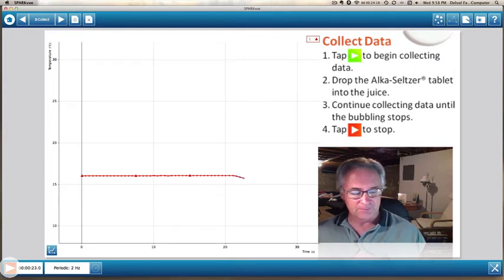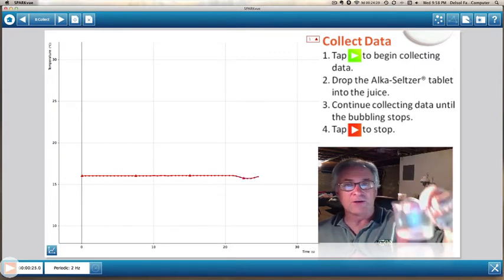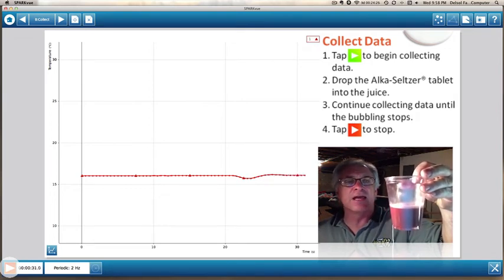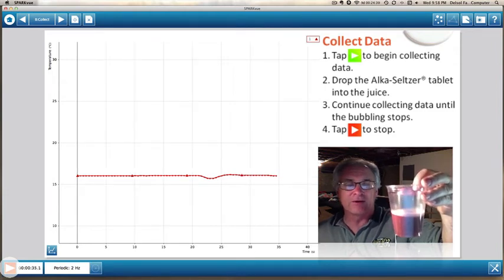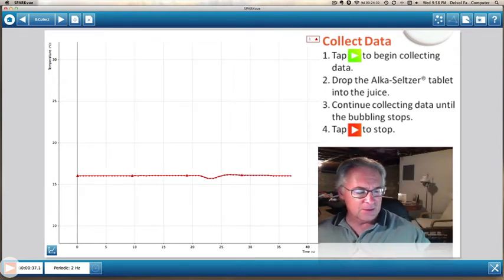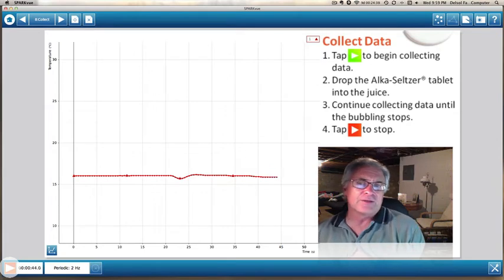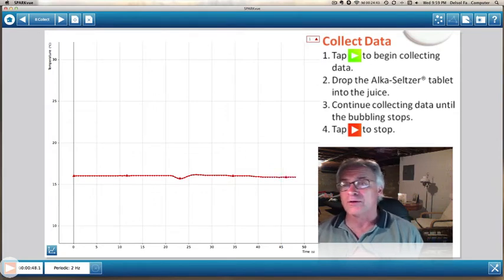And I'm just going to drop it in right now. And now it's fizzing. If you take a look at that, you can see it's beginning to fizz a little bit. Not as much as I'd like to see it fizz, but it's definitely fizzing. And we're going to be recording the temperature. And we're going to let that go. I'm going to set this aside. And we're going to hit stop once it stops fizzing and bubbling. And depending on the kind of juice, if it's cold or if it's warm, it's going to give you a greater or lesser of a reaction.